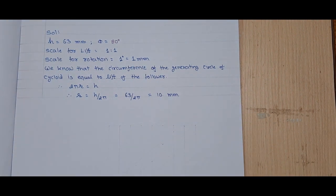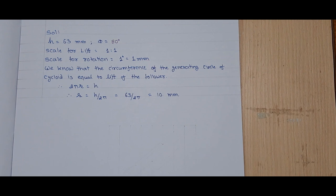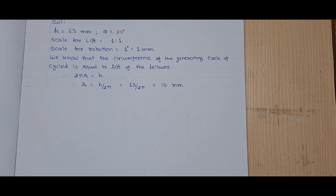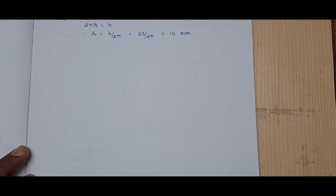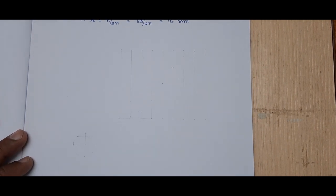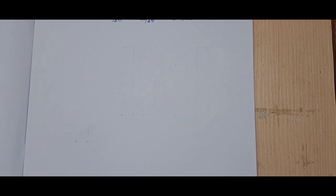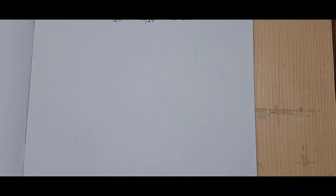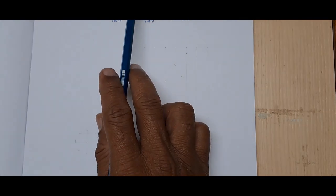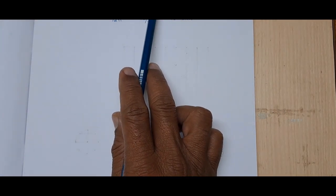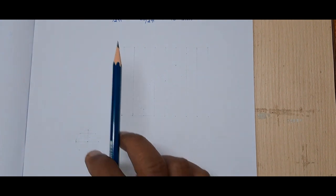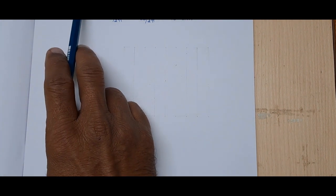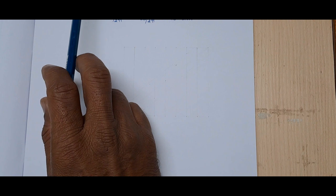Now, let us draw the displacement curve for the given data. Here, the lift is 63 mm and rotation is equal to 80 degrees. So we need to draw a rectangle with length of 80 mm, as the scale is 1 degree is equal to 1 mm, and height is equal to 63 mm.